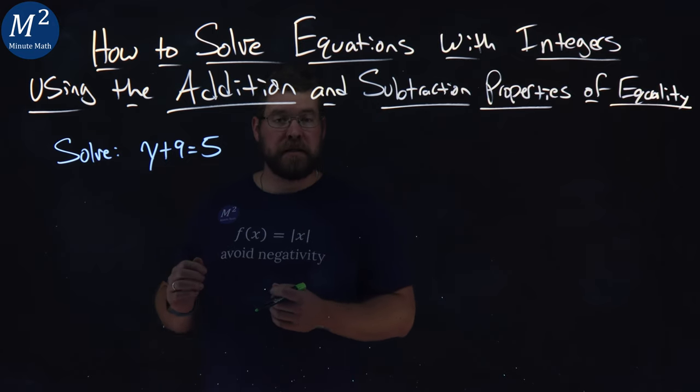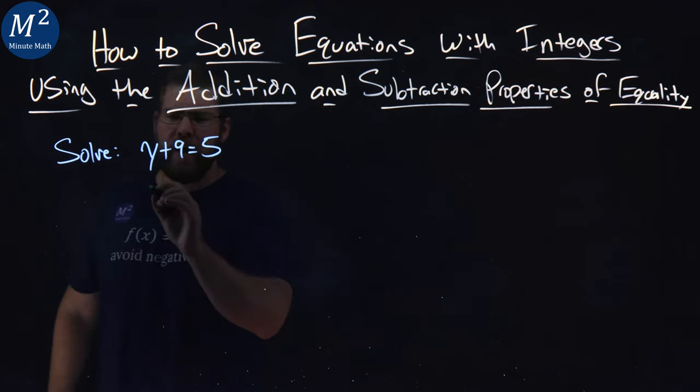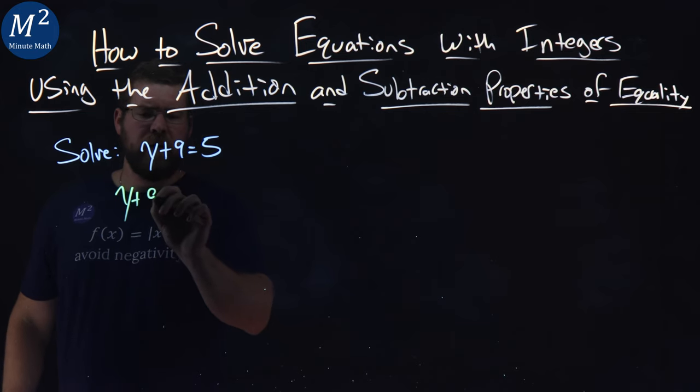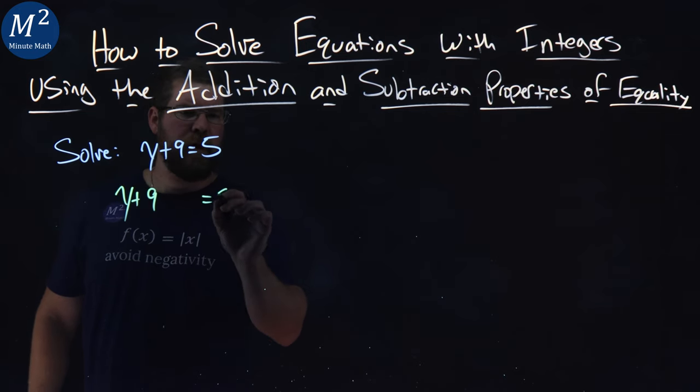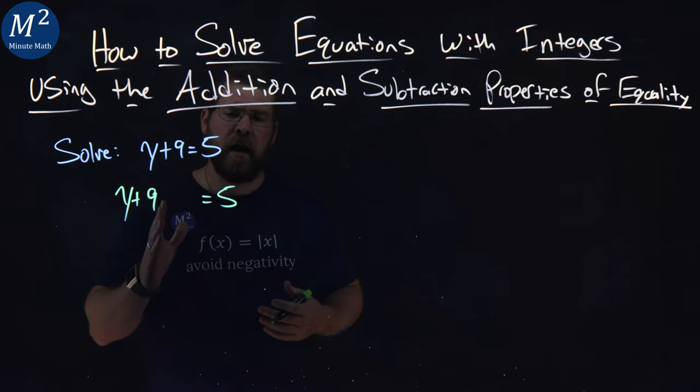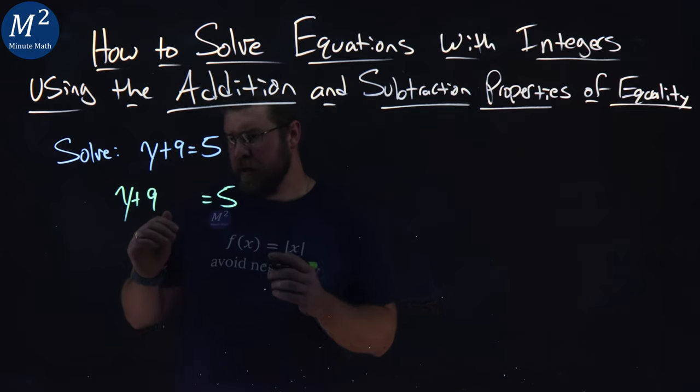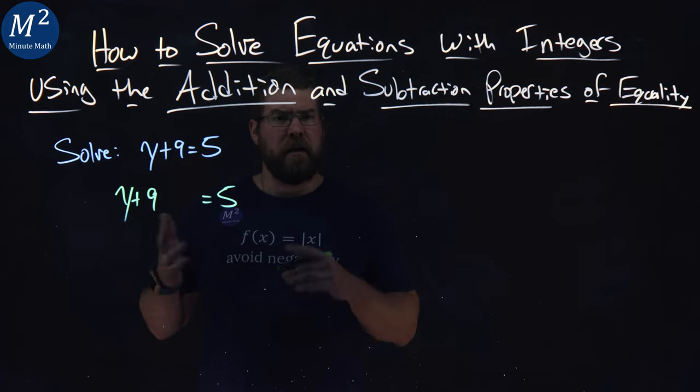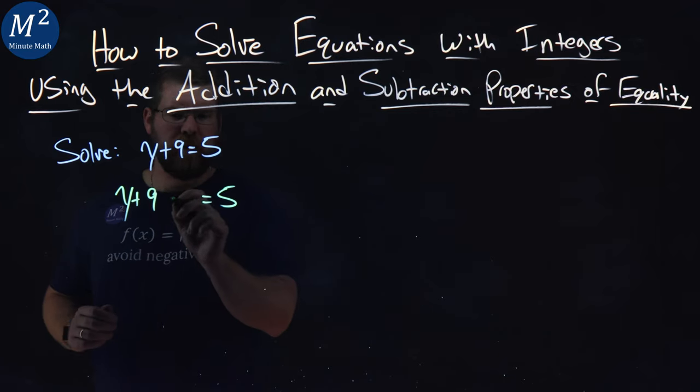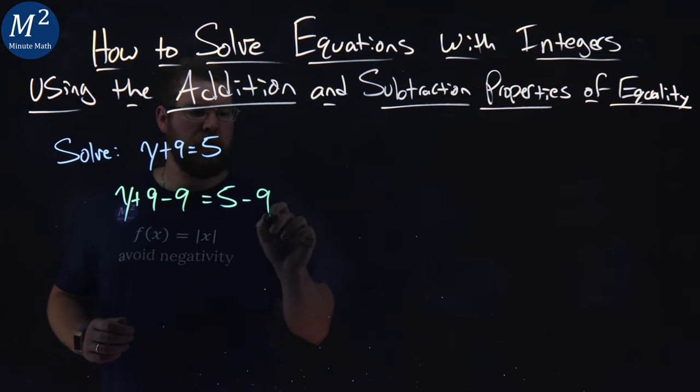My goal is to get y by itself. So I have y plus 9 equals 5. If I want to remove the 9 and bring it to the right-hand side, the opposite of adding a 9 is subtracting a 9. So if I want to get rid of it, I subtract 9 from both sides.